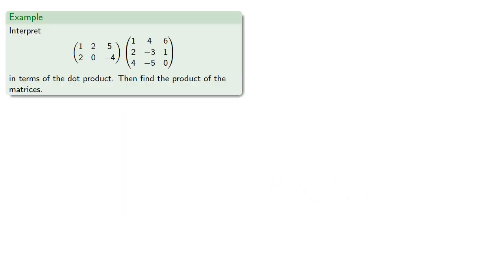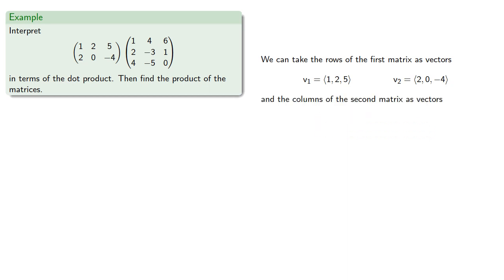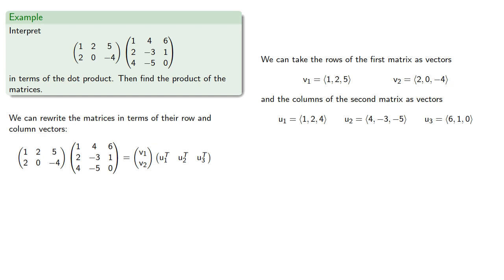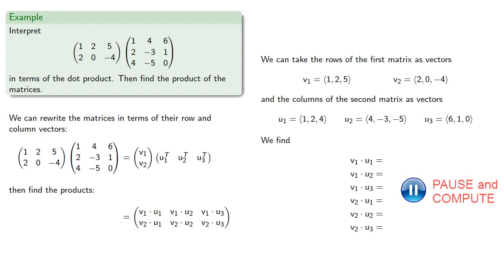For example, let's take this matrix product and interpret it in terms of the dot product, then find the product of the matrices. We can take the rows of the first matrix as our vectors. Our two matrices can be rewritten as a matrix of row vectors and a matrix of column vectors, and our product can be expressed in terms of the dot product of these vectors, which gives us our matrix product.